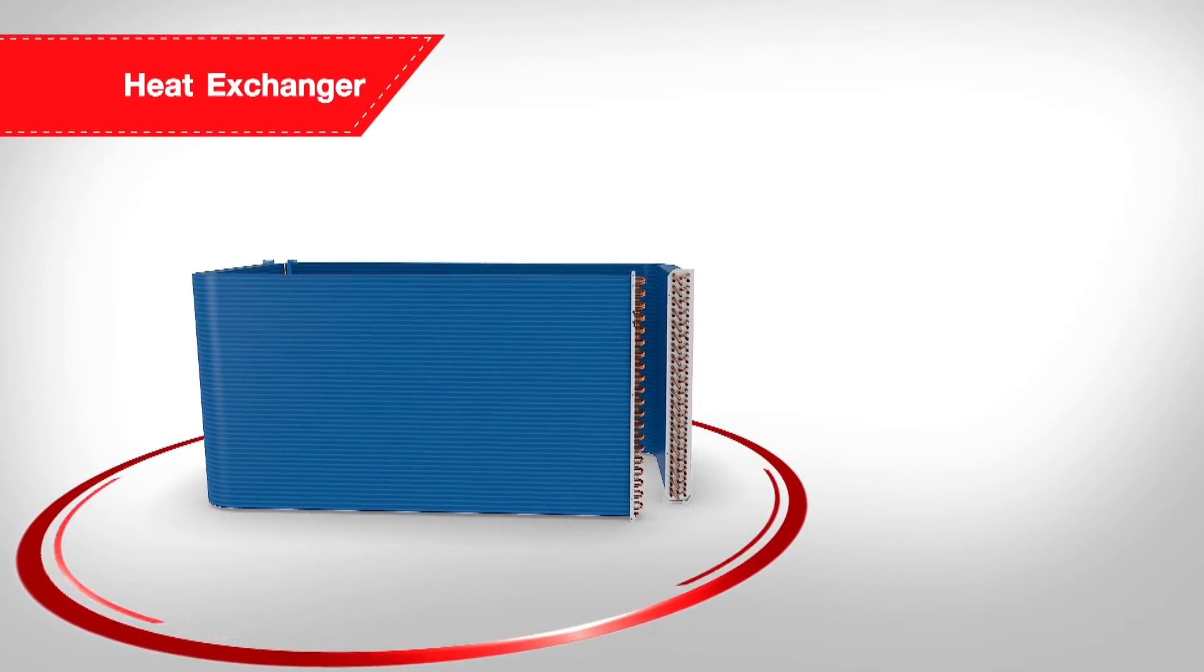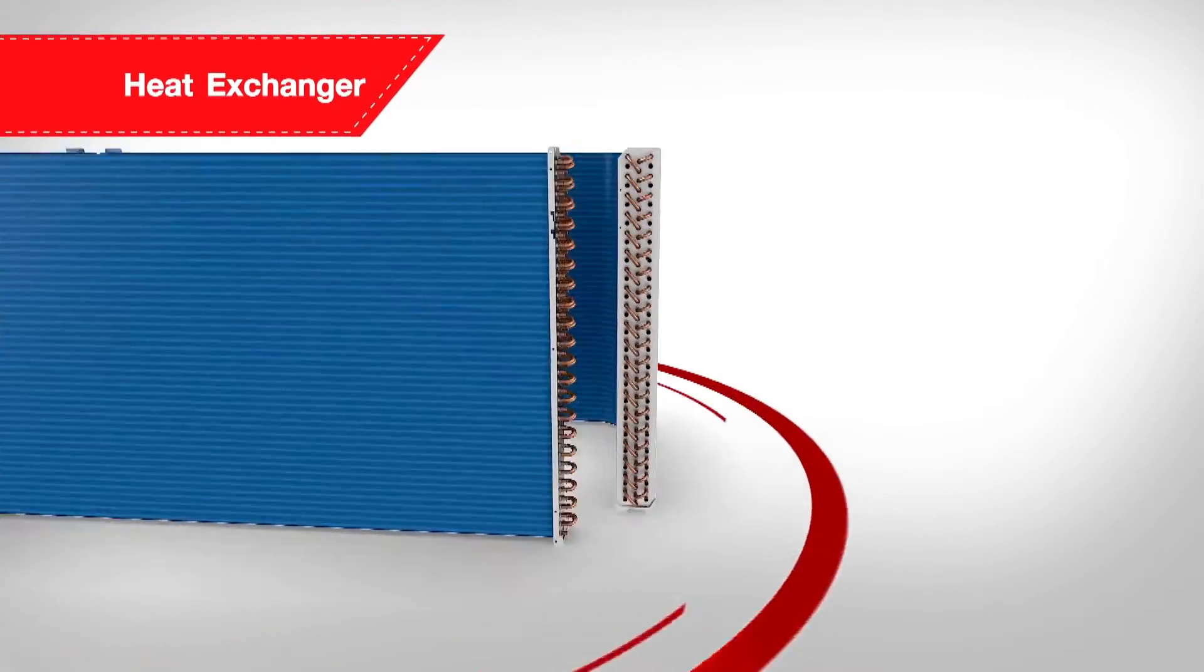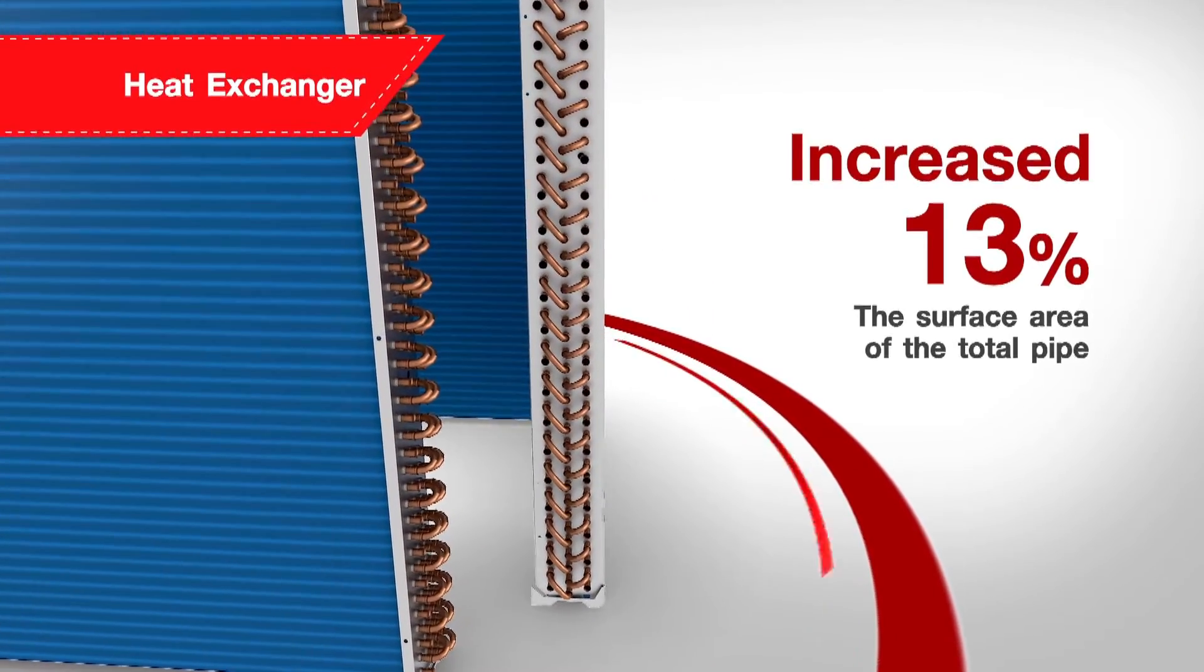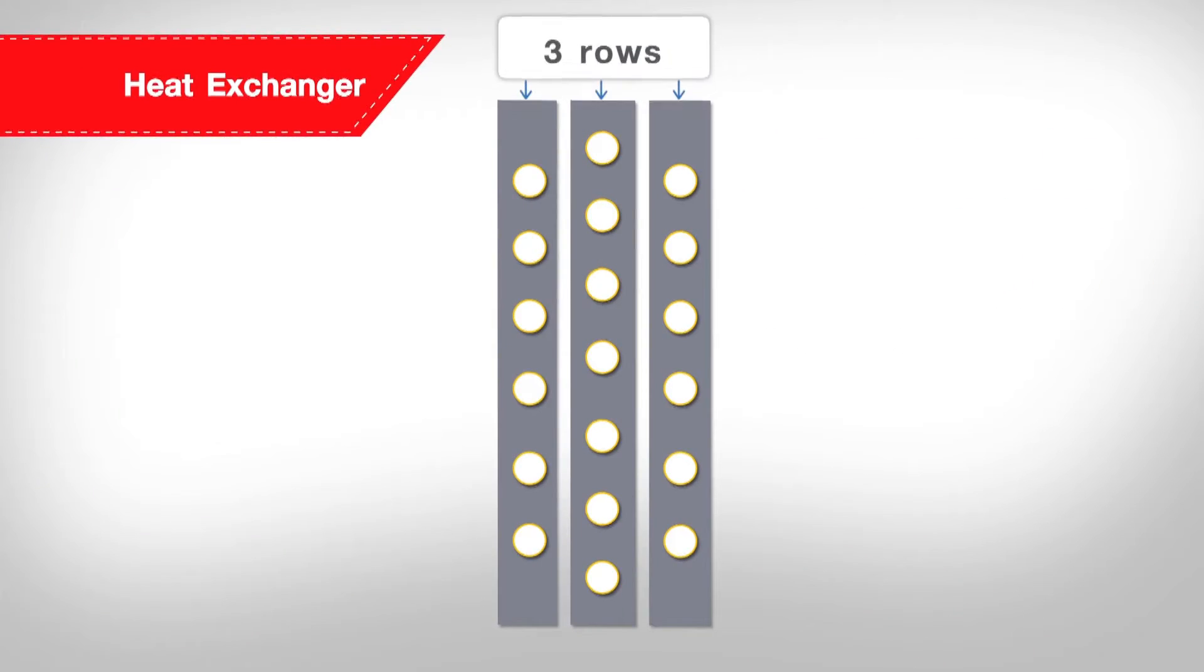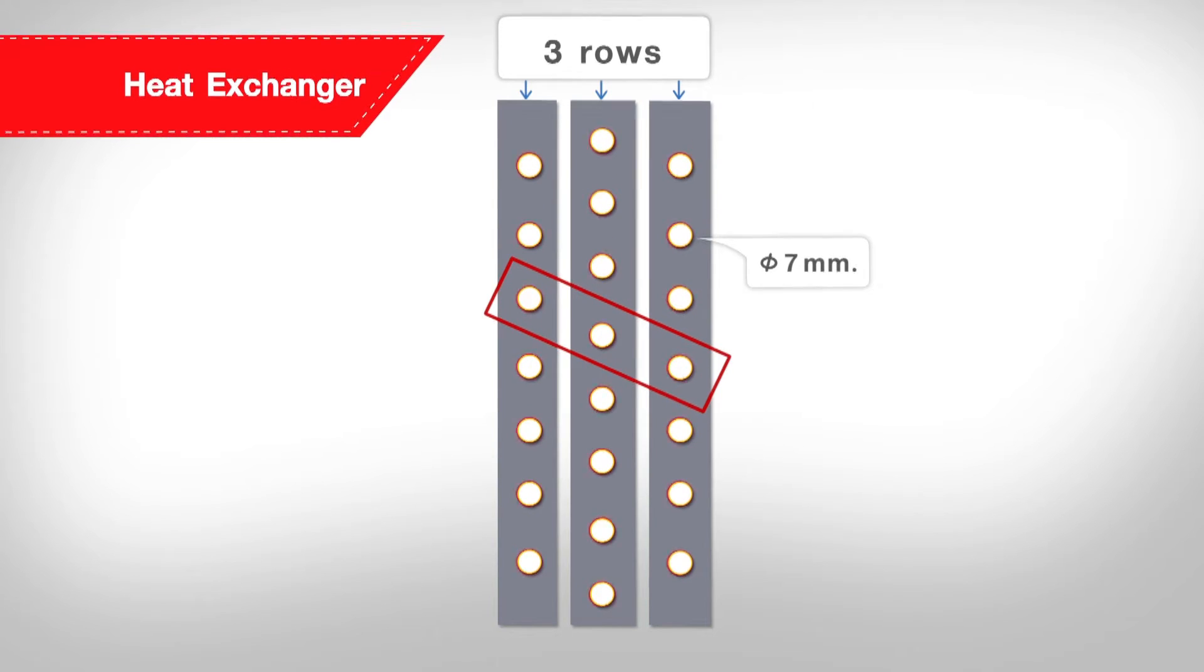The new heat exchanger provides the SMM-SE with up to 13% more surface area available for heat transfer. The triple-layer pipe configuration, along with the newly improved 7mm tubing, promotes higher efficiency by increasing the air contact with the coil.